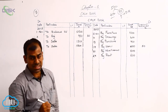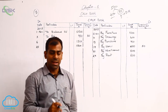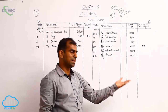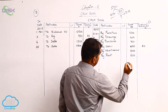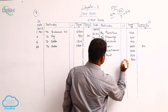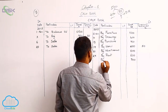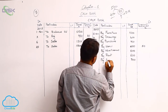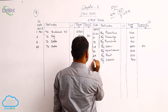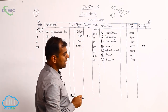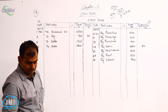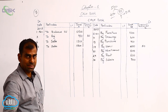The last transaction is on the 30th — salary is paid, amount 700. Enter 700 on the credit side, reason 'salaries', date the 30th. Now total both sides and check which side is more to balance the cash book.